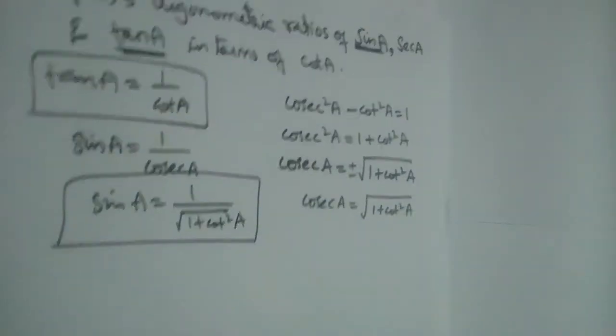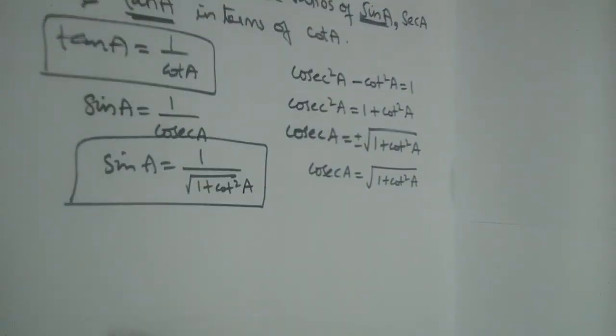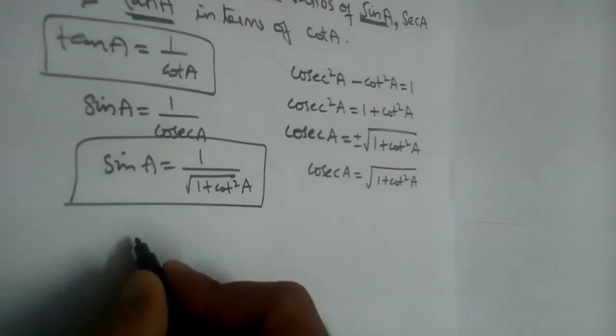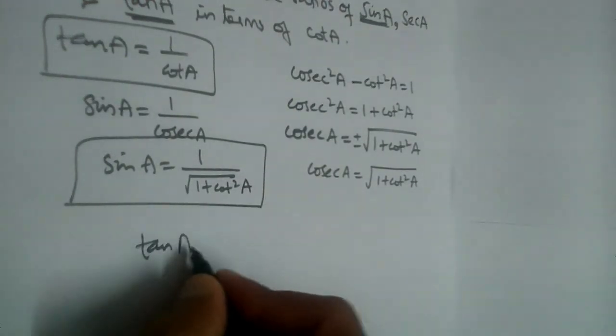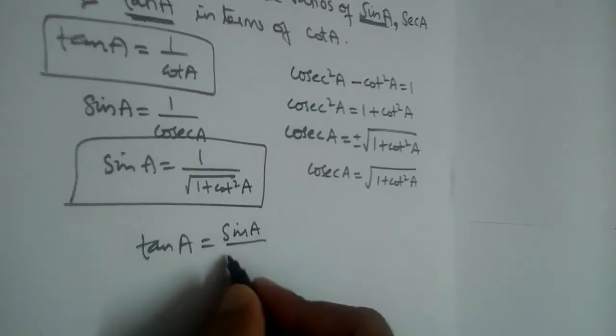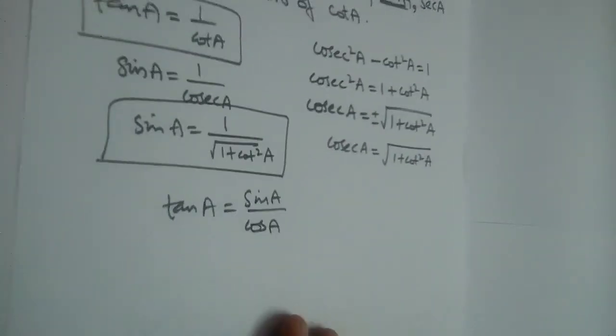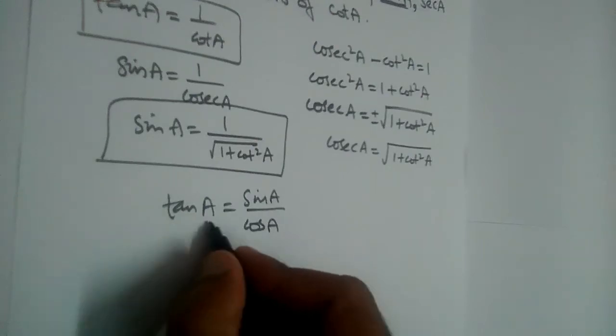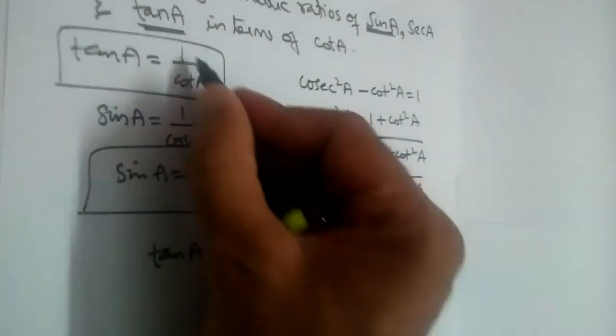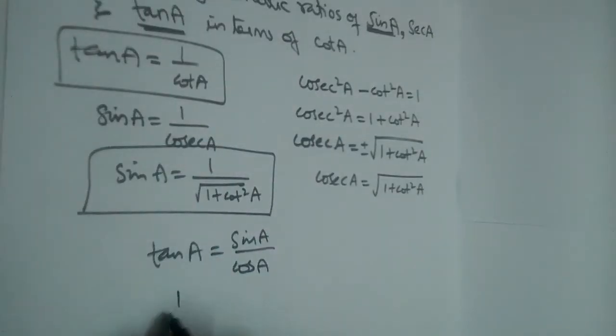For that, we know tan A equals sin A by cos A. What is tan value in terms of cot? 1 by cot. So 1 by cot A equals the sin value, which we got as 1 by root 1 plus cot square A, divided by cos A.